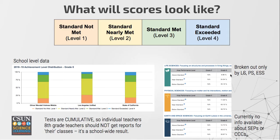In addition to this school-wide number, you'll also get a breakdown based on how well students are doing within each branch of science: the life science branch, physical science, and earth and space science. That's all we get in terms of breakdowns — there's no information broken down about how well we're teaching specific SEPs or CCCs or any specific content. Even in high school, physical science, physics, and chemistry are grouped together in the score reports.